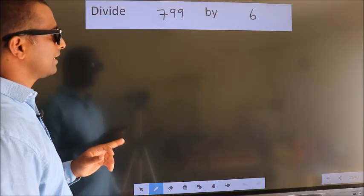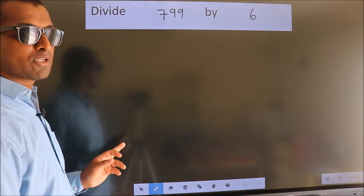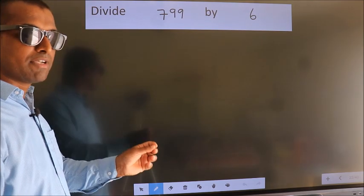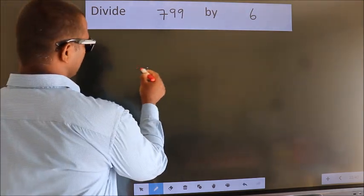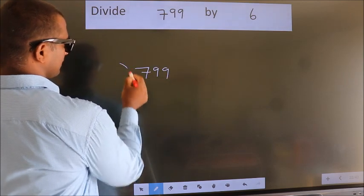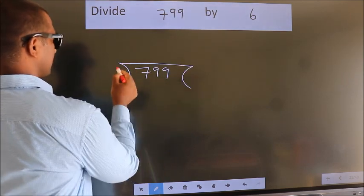Divide 799 by 6. To do this division, we should frame it in this way: 799 here, 6 here.